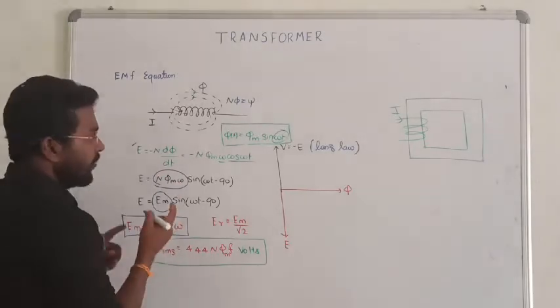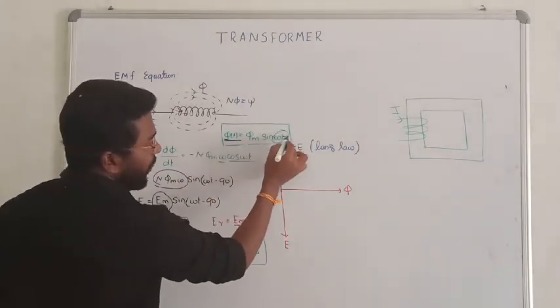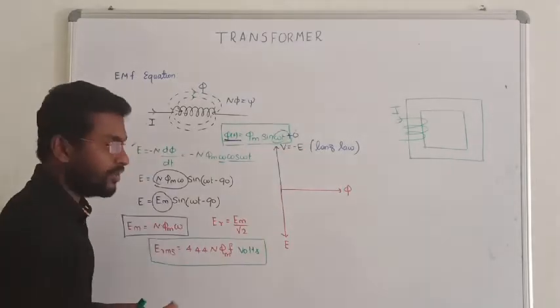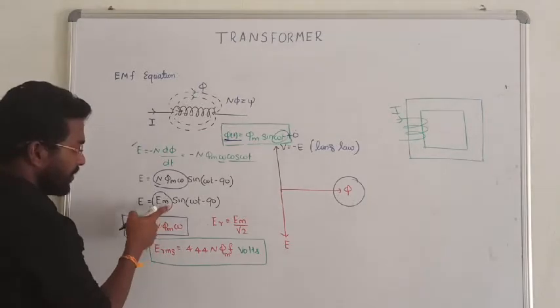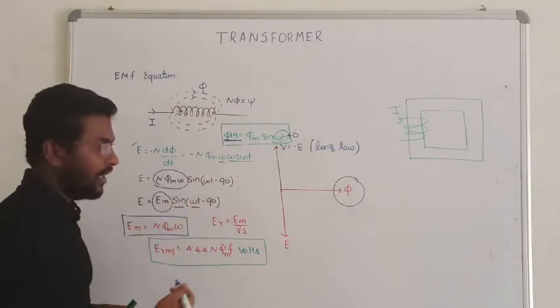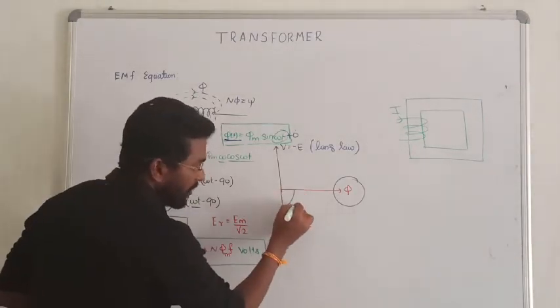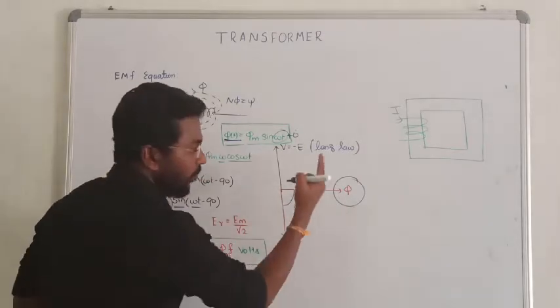Next, see the phase difference. Flux in every to power of φm sin ωt plus 0 degree. So it is being placed up to 0. Whereas the induced EMF is being placed up to maximum sin ωt minus 90. So the induced EMF always 90 degree lagging from the flux, clear?